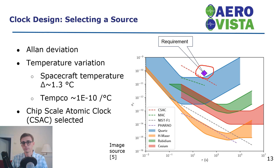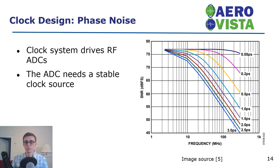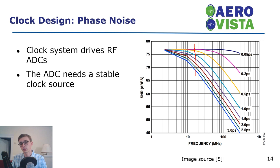In addition to long-term stability, our clock source needs to maintain low phase noise, which is a measure of short-term stability. This is because the clock system drives the RF ADCs, and any phase noise or jitter in the clock signal can couple into the signal path as signal noise. The ADCs selected for this mission have a maximum signal-to-noise ratio of about 76 dB, and at 15 MHz, jitter of even a few picoseconds can significantly degrade the SNR of our signal processing chain. Therefore, we require that the clock source have a total integrated jitter of less than about a picosecond.